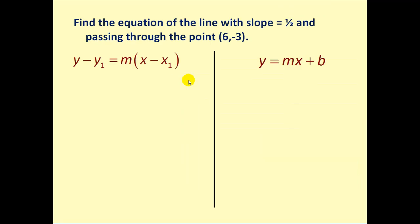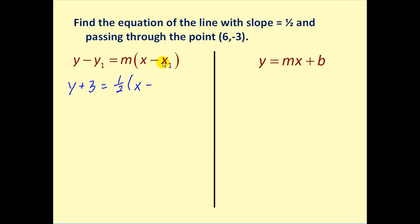The second useful purpose of point-slope form is to find the equation of a line. For example, find the equation of the line with slope one-half passing through the point (6, -3). Using point-slope form, y₁ is negative three, so we write y minus negative three — which becomes y plus three — equals one-half times x minus six.